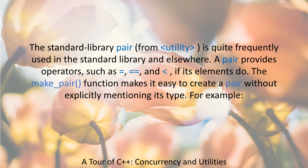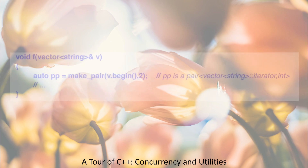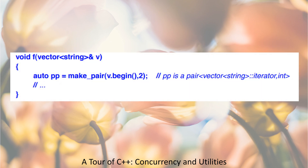For example: void f(vector<string>& v) { auto pp = make_pair(v.begin(), 2); // pp is a pair<vector<string>::iterator, int> }